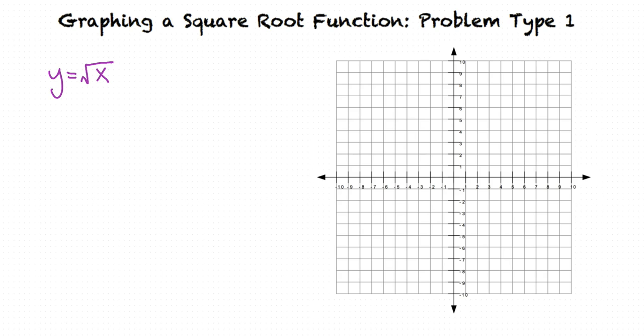Let's choose a few points to plot on this graph. We cannot enter negative numbers into a square root function, so let's use 0 and a few positive values for x in our table. Now let's find the corresponding y values for each of these x values. The square root of 0 is 0. The square root of 1 is 1. The square root of 4 is 2. And the square root of 9 is 3.